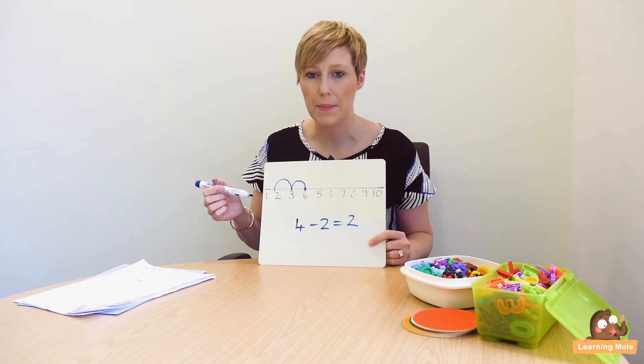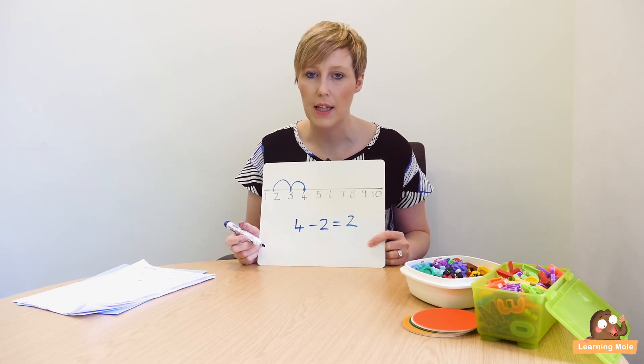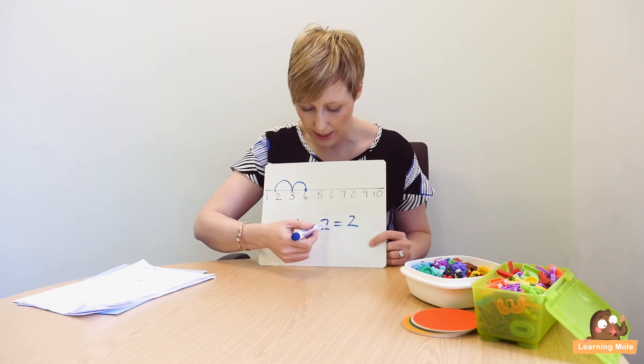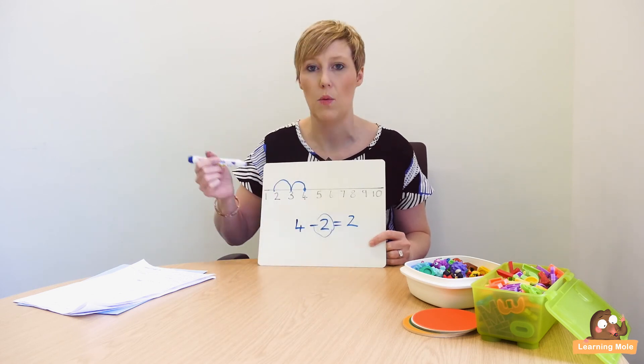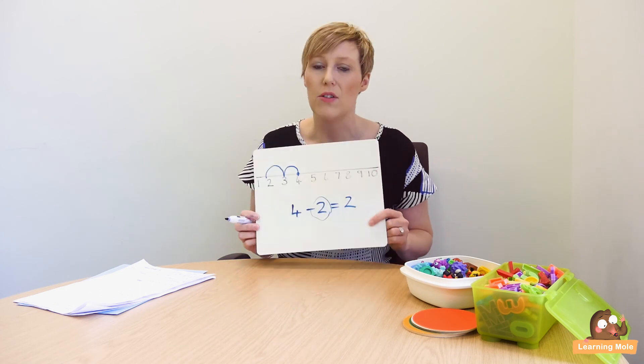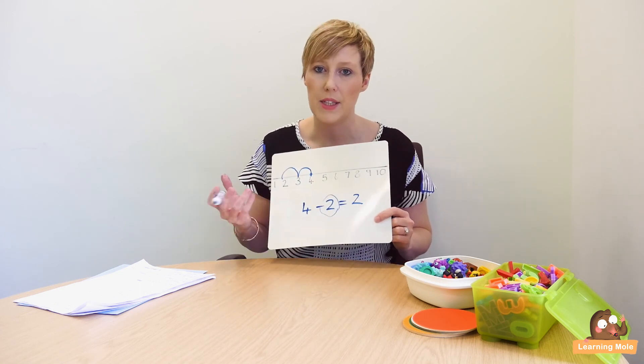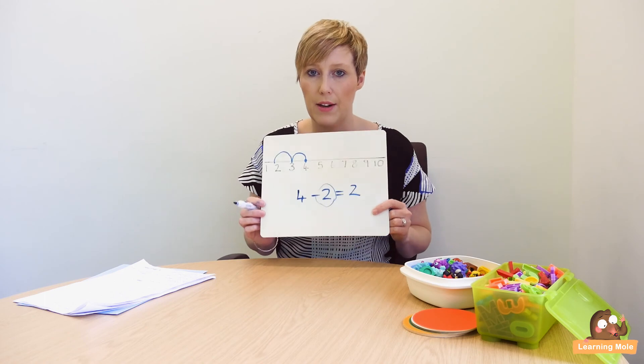I would also always get your child to double check that they've done their two jumps. So yes, how many jumps did you have to do? Two. Have you done two? Yes, one, two. So you're starting to enforce that idea of double checking calculations as well from an early age.